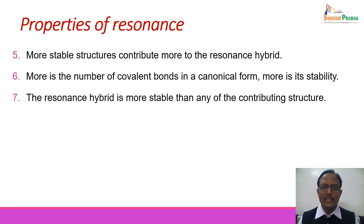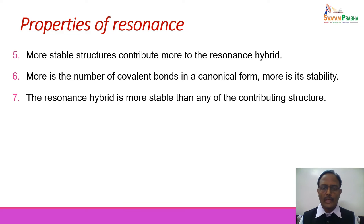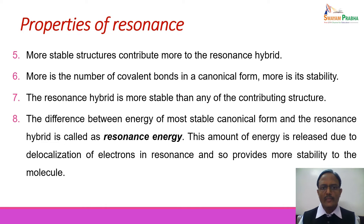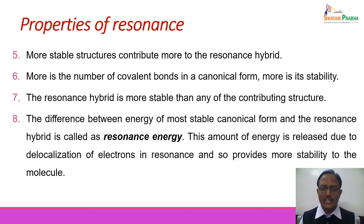The resonance hybrid is more stable than any of the contributing structures. Each contributing structure has some associated energy, and the energy of the resonance hybrid is always less than that of any contributing structure, so the hybrid is more stable. The difference in energy between the most stable canonical form and the resonance hybrid is called the resonance energy. This energy is released due to delocalization of electrons, and it acts as the driving force for the formation of resonance.